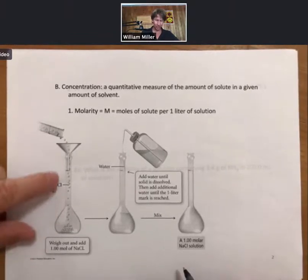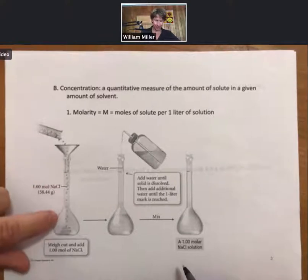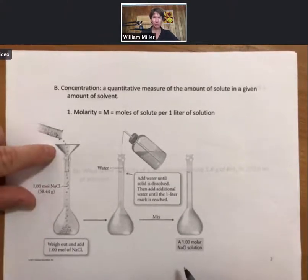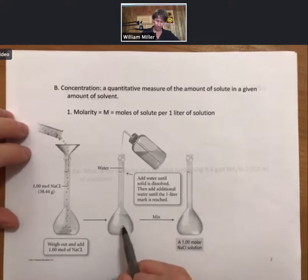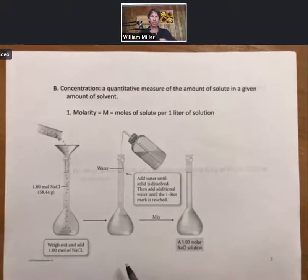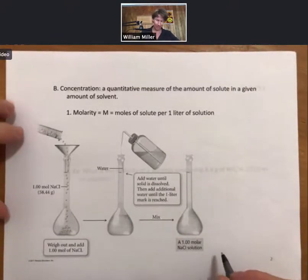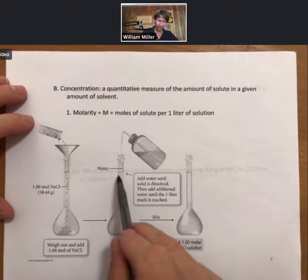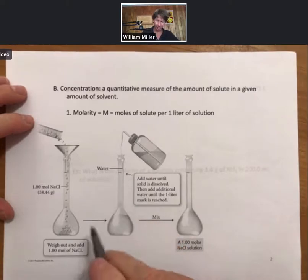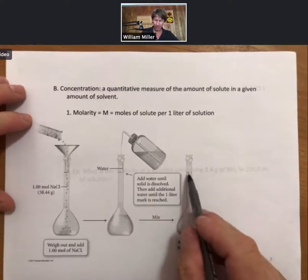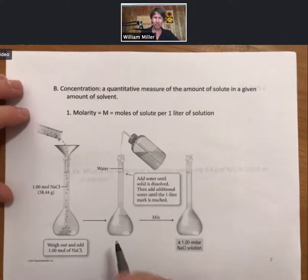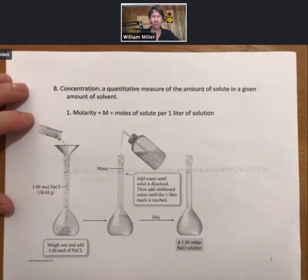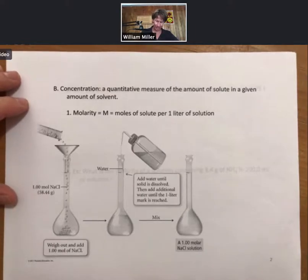We would pour it into a volumetric flask, and this is the shape of a volumetric flask. We would use a funnel to make sure we don't miss. We would add some water until the solid is dissolved, swirl if you will, and we will get to do this in the lab, and then fill it up to the meniscus. The meniscus sits right on the mark that tells us exactly what the volume is. In this case, it's a one liter volumetric flask. We have one mole in that one liter.